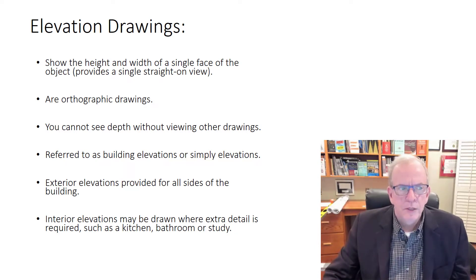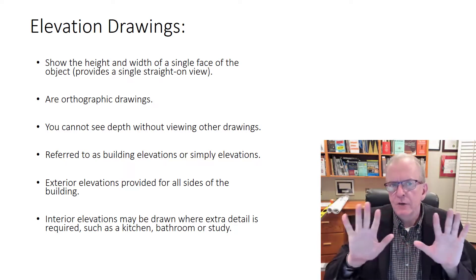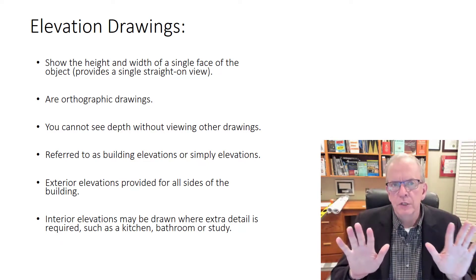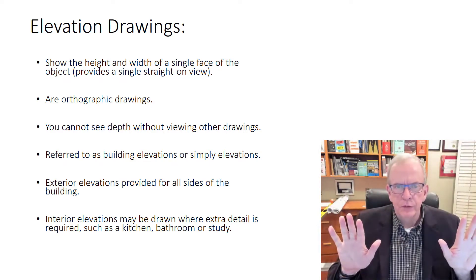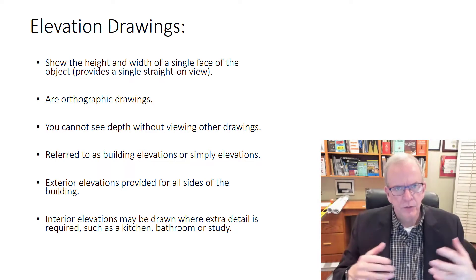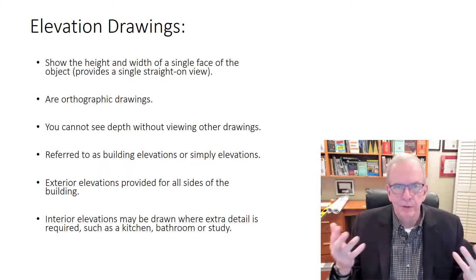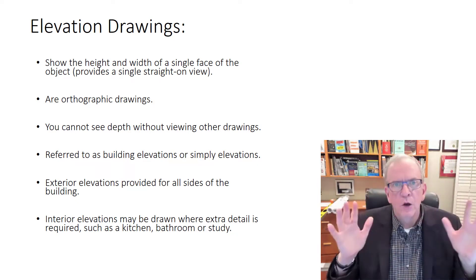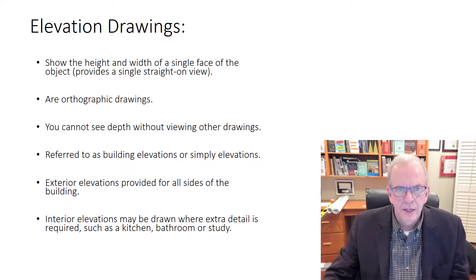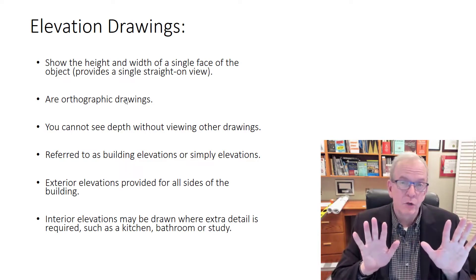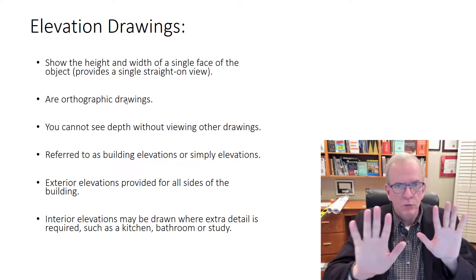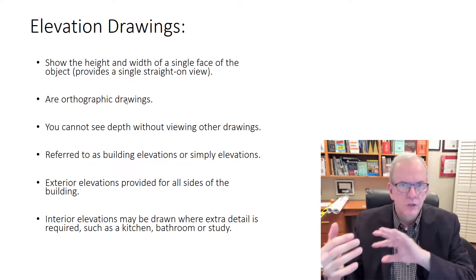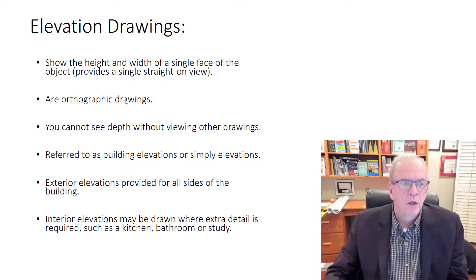Elevation drawings show the height and the width of a single face of the building. They're orthographic drawings — flat, straight-on views — which is what we use in construction. We also use 3D models in more advanced applications to enhance visualization. The advantage of orthographic drawings is you can put a lot of dimensions and information around them; the downside is you don't see depth without looking at a bunch of different views to fully understand what's going on.